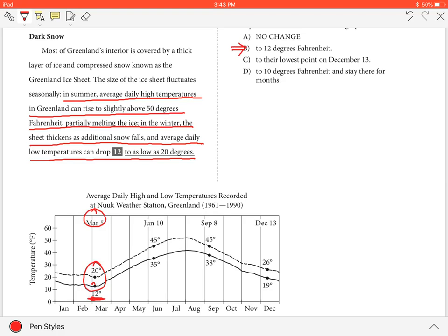Choice A is incorrect because the phrase 'as low as' suggests that the temperature falls no lower than 20 degrees Fahrenheit.